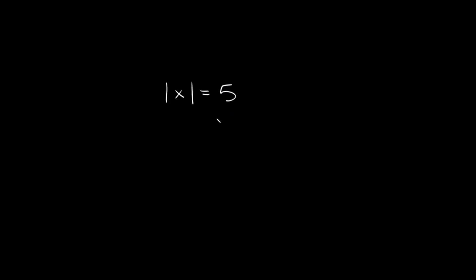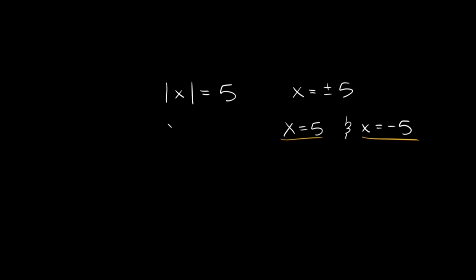So the absolute value of x is equal to 5. X here could be either positive or negative 5. Our answer would be x is equal to positive or negative 5, or we could write it as x equals positive 5 and x equals negative 5. Both of these are true statements, right? Because the absolute value of positive 5 is indeed 5, and the absolute value of negative 5 is also equal to 5.